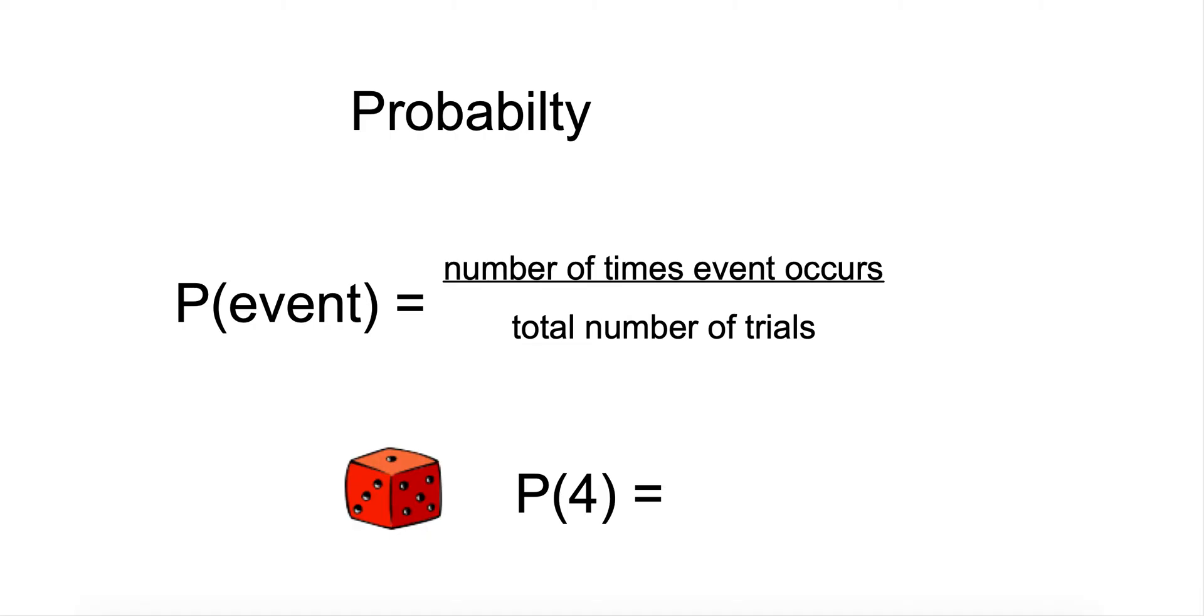Theoretical probability is what we're going to be studying today. That's the probability of something that we think will happen, not what's actually happened. Theoretical probability is what we think will happen.